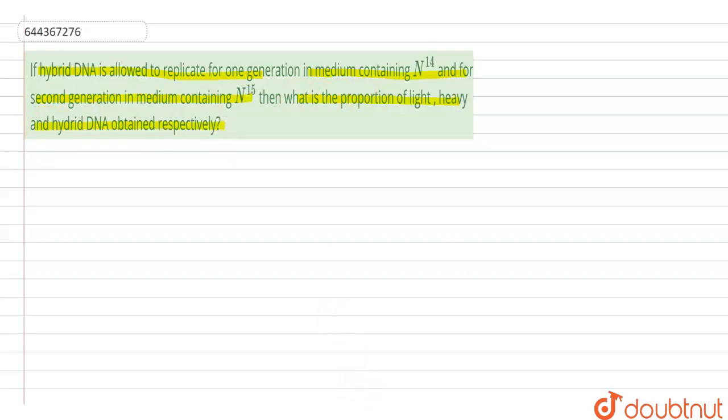So let's make this diagram which will be able to represent clearly what we are trying to find out. We are taking N15 as the red color, so this is the N15 heavy isotope which is taken from the ammonium chloride NH4Cl.